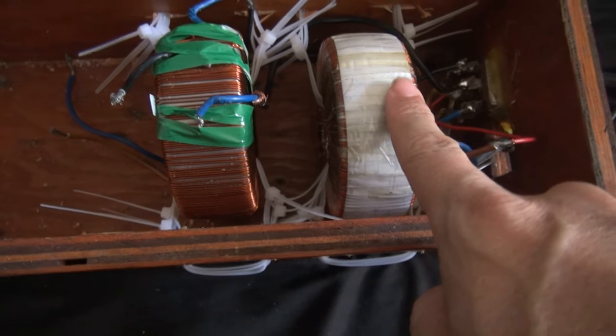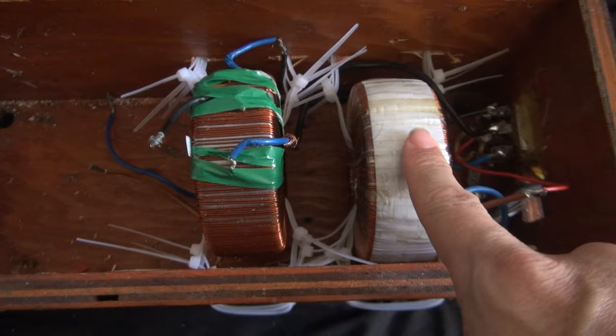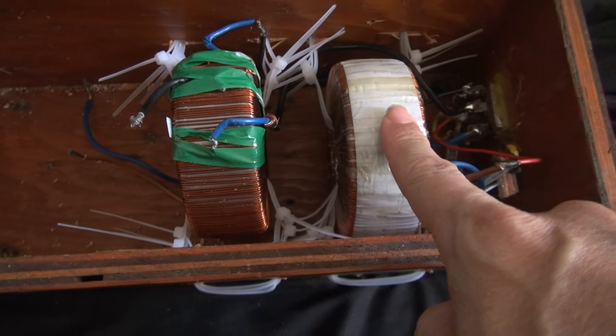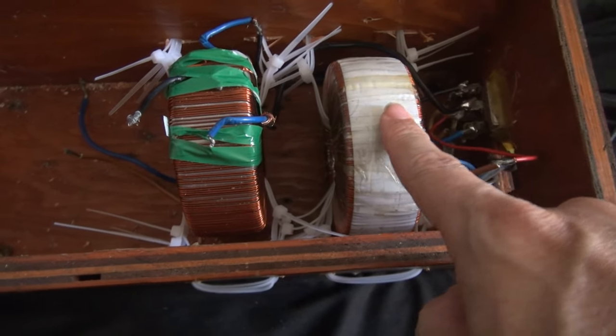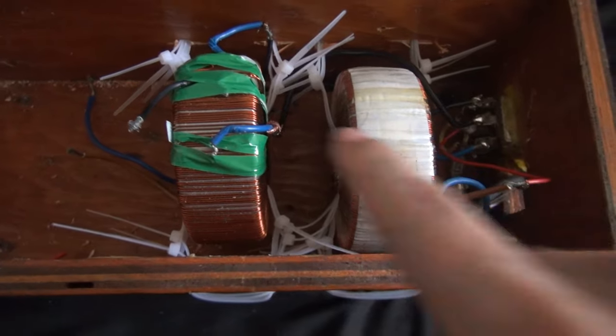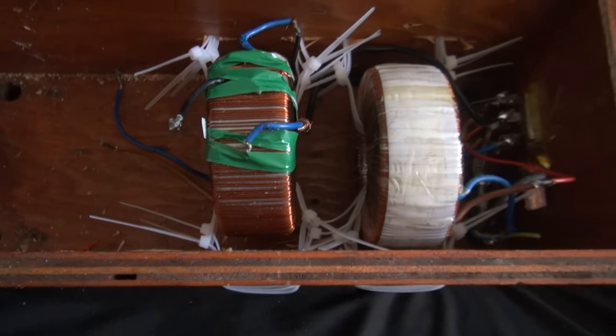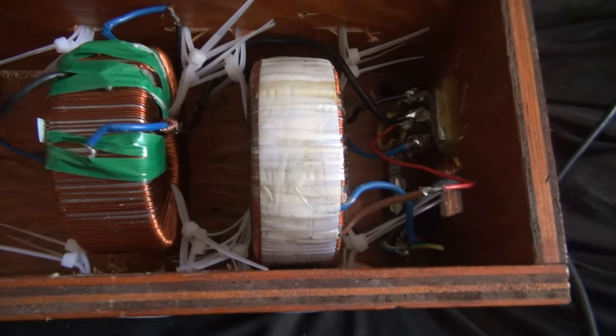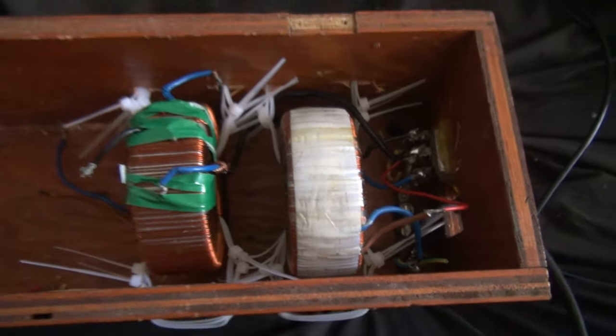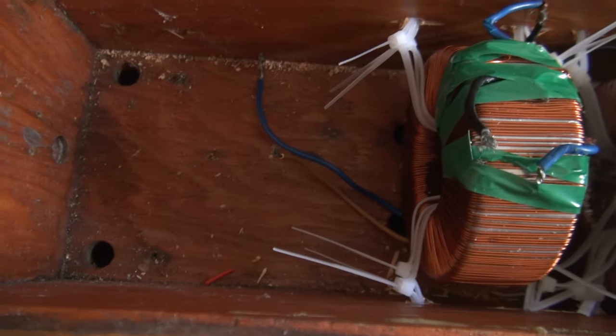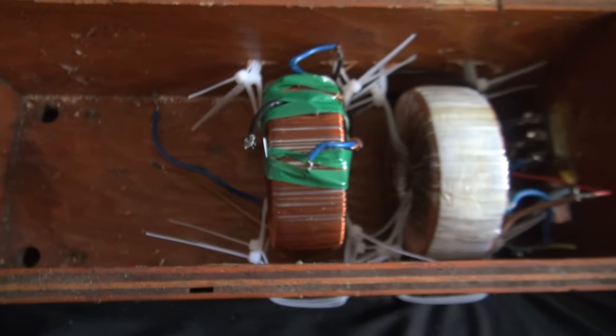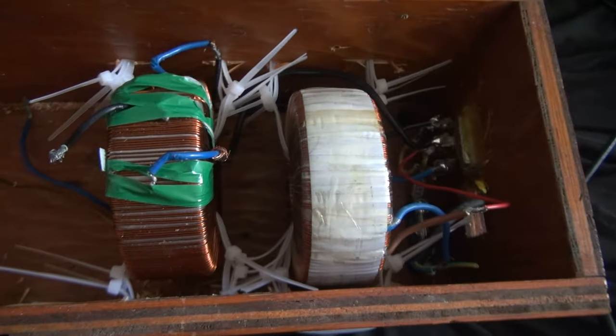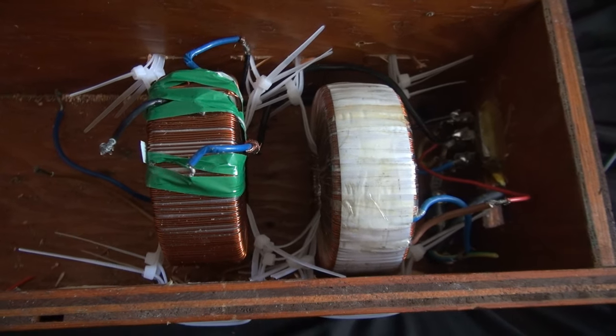Both of the transformers are in. So this transformer is going to take the mains voltage and step it down to either 52 or 28 volts, depending on which tap I use. And then this transformer is going to step it back up to 120 or 240, again depending on which tap I've used on the first transformer. So the next thing to do is put the rectifiers in, but I think before I do that, I'll just test that this thing is actually doing what it should be doing.